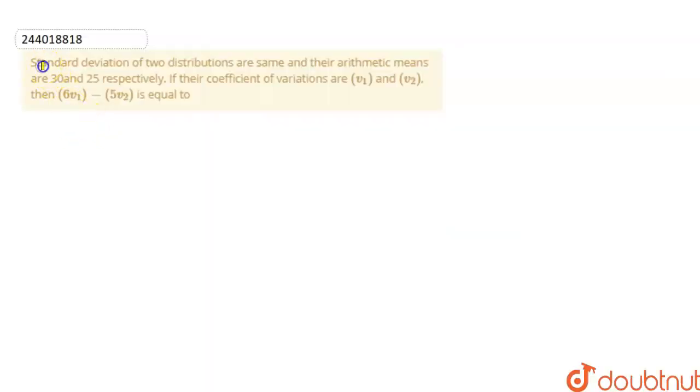Hello guys. The standard deviations of two distributions are the same, and their arithmetic means are 30 and 25 respectively. If the coefficients of variation are v1 and v2, then 6v1 minus 5v2 is equal to what?